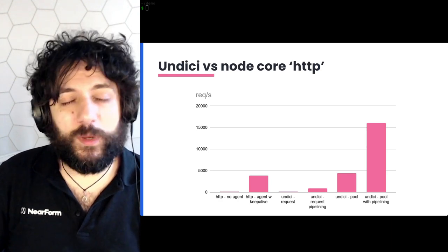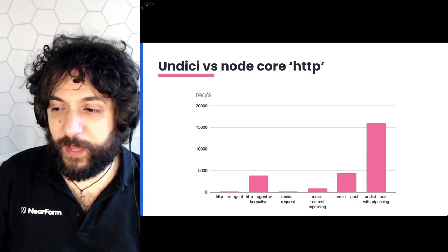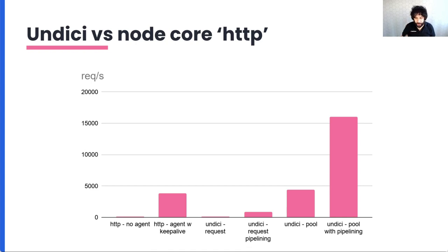How does this compare? Is this fast enough? If we consider a simple system as before with keep-alive — if we don't enable pipelining, there's not much difference. But if we enable pipelining, we can dramatically and drastically increase the number of requests per second that Node can send. We are minimizing the number of round trips to the kernel and the operating system, and we are using our socket in the most efficient way.